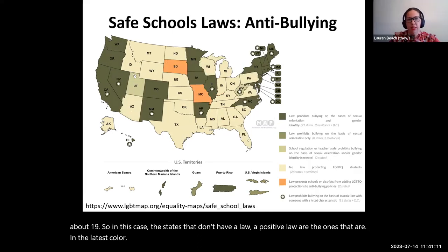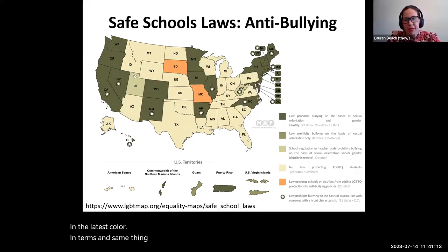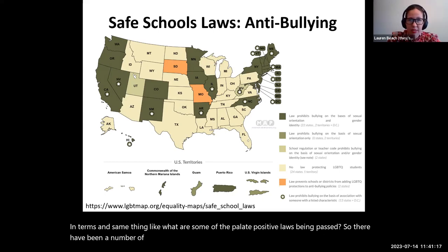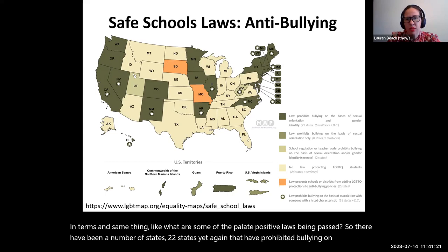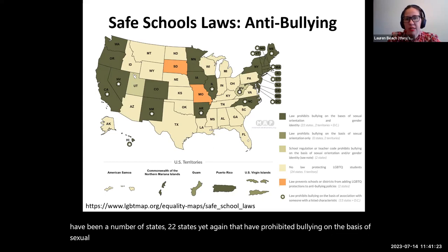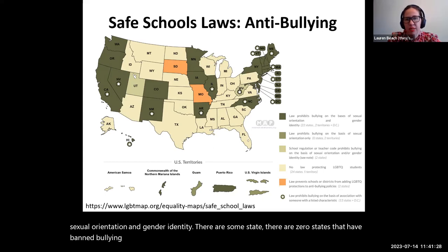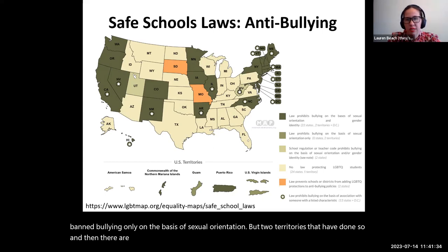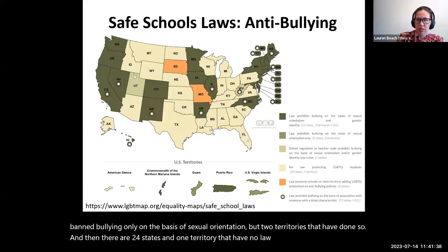In terms of positive laws being passed, there have been a number of states — 22 states — that have prohibited bullying on the basis of sexual orientation and gender identity. There are zero states that have banned bullying only on the basis of sexual orientation, but two territories that have done so. And then there are 24 states and one territory that have no law protecting LGBTQ students.